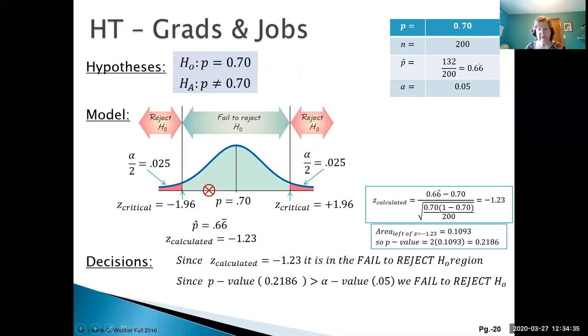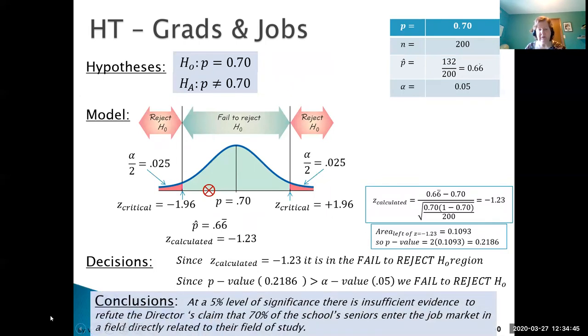Looking at our conclusion, this is one slide showing all the information. There's our Z calculated and our P-value calculation. Our final overall conclusion: at a 5% level of significance, there is insufficient or not enough evidence to refute the director's claim or to reject the null hypothesis - that 70% of student seniors entered the job market in a field directly related to their study. So it appears that it has not changed.